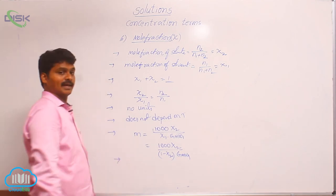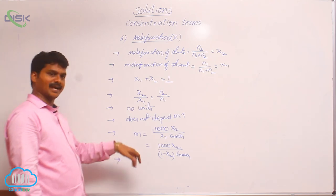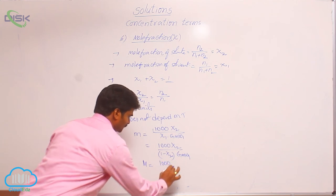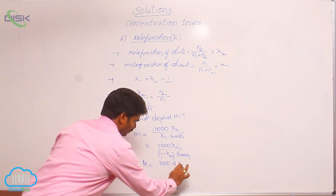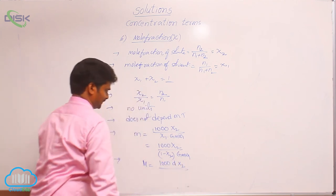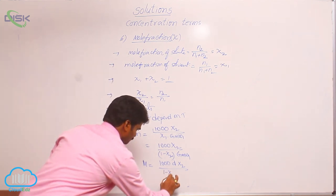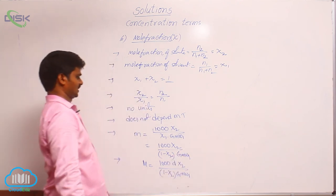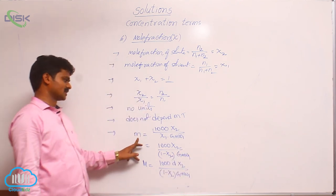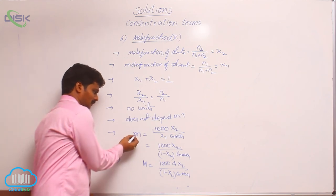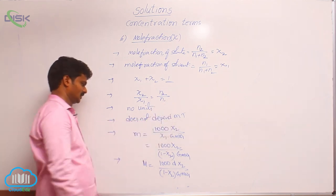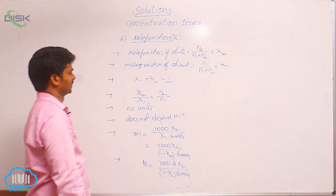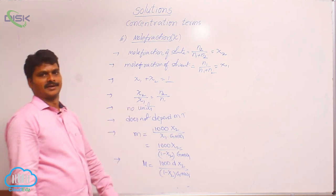Let us see the relation between molality, molarity, and mole fraction. Molarity (M) = 1000 × density × mole fraction of solute / ((1 − x2) × gram molecular weight of solvent). This is the relation between molality (small m) and mole fraction of solute, and molarity (capital M) to mole fraction of solute. These are all concentration terms.